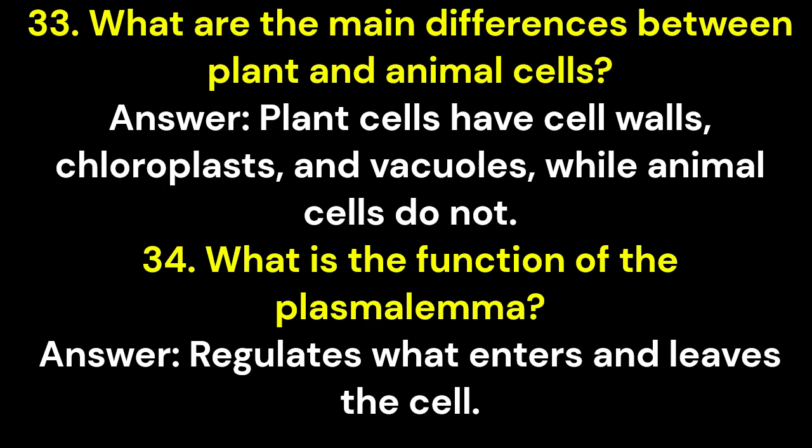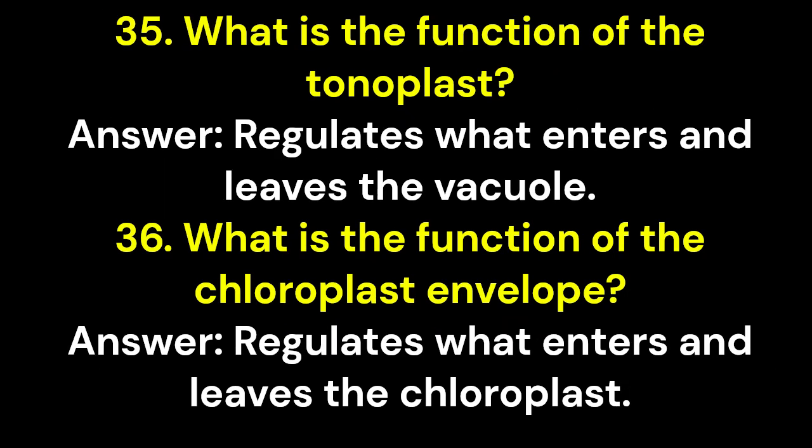33. What are the main differences between plant and animal cells? Answer: Plant cells have cell walls, chloroplasts, and vacuoles, while animal cells do not. 34. What is the function of the plasmalemma? Answer: Regulates what enters and leaves the cell. 35. What is the function of the tonoplast? Answer: Regulates what enters and leaves the vacuole.